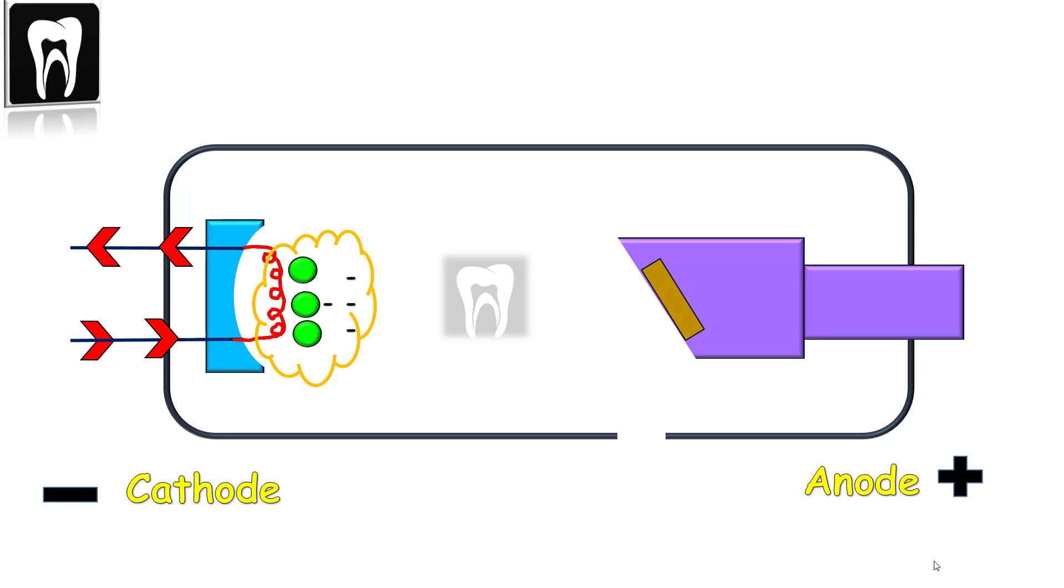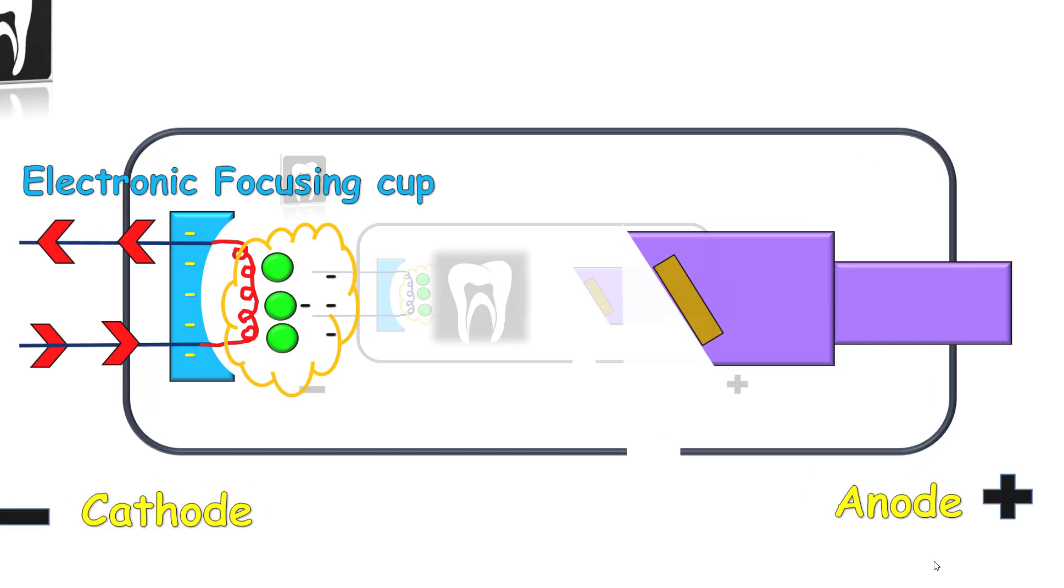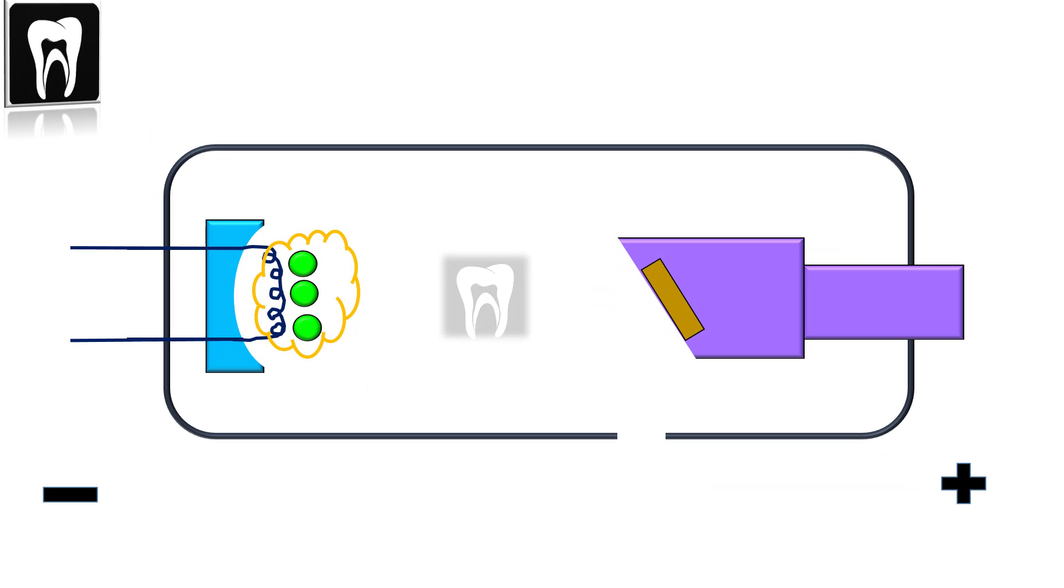Another part in the cathode is the electronic focusing cup, made of molybdenum. It's a negatively charged concave bowl that focuses the electrons into a narrow beam toward a small area on the anode, contracting the width of electron distribution.